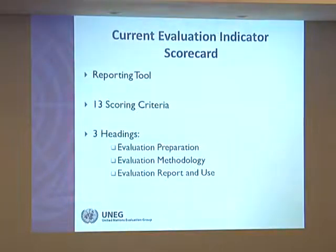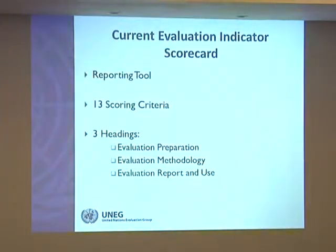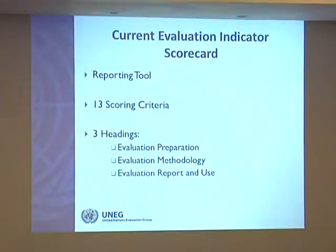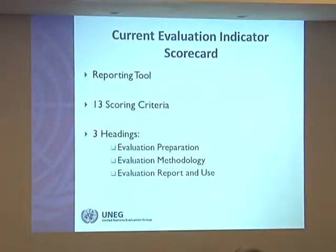What do entities actually need to do to report against this evaluation performance indicator? They are supposed to use the scorecard, which is the reporting tool representing this harmonized framework. The scorecard is composed of 13 scoring criteria organized around three headings representing the different evaluation stages: preparation, evaluation methodology, and evaluation report and use. Entities assess all evaluations — or a sample — conducted in a given year against these 13 criteria. A guidance document and webinar presentation with full technical details is available.